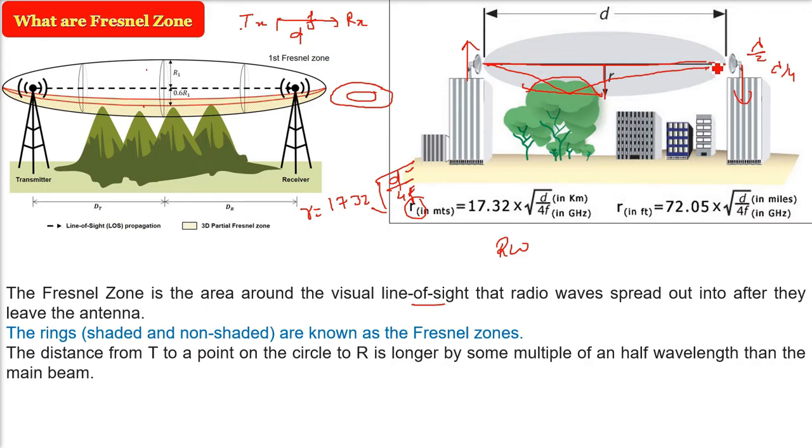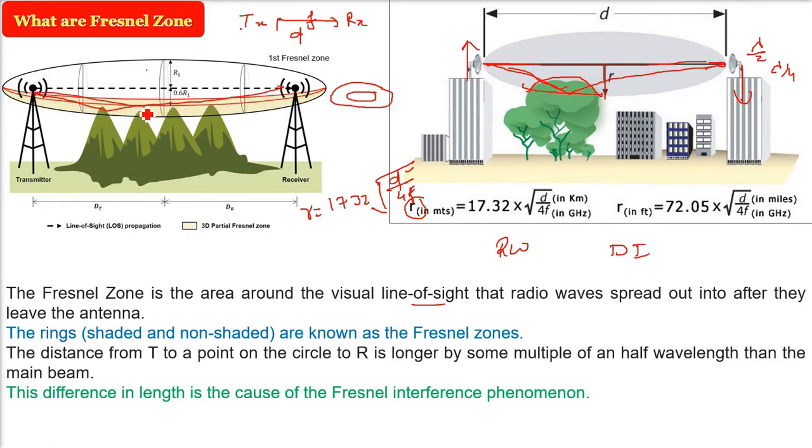There will be some reflection, diffraction, refraction, scattering, all different kinds of activity take place. But the multiple path is the major cause and the difference in the length because you have a Fresnel zone interference phenomena.